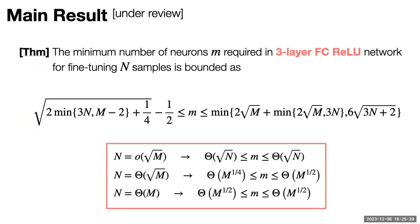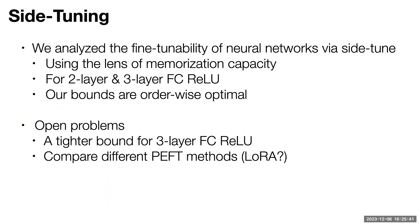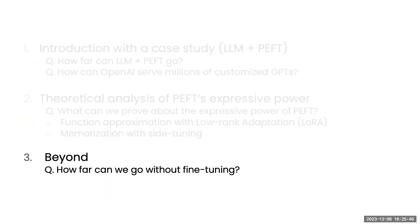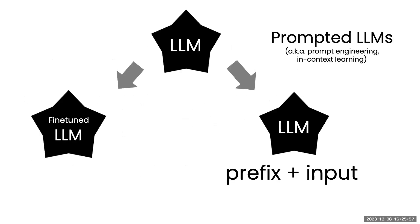We can also extend this to three-layer ReLU networks, where the proof technique is more involved but the characterization of N follows similarly. Now, moving to the last part: what can you do without any fine-tuning? In-context learning and prompting — you're not changing model parameters, just changing the inputs by providing a prefix, extra text, or extra examples to steer the model.